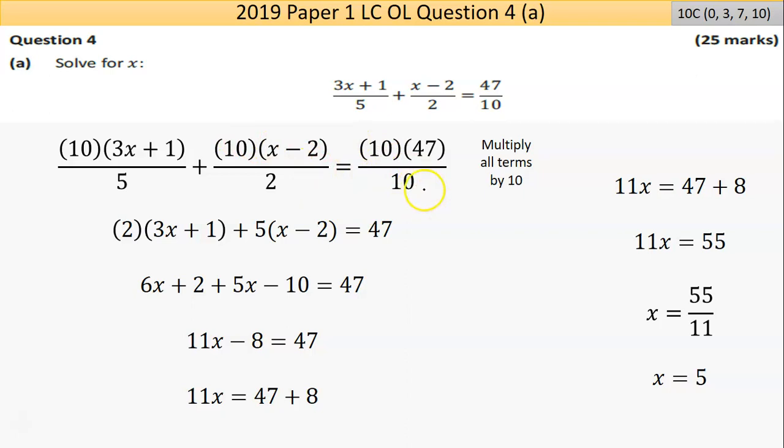I've multiplied every term by the same number, which I'm allowed to do in an equation. The reason I've done that is so that this would happen: 10 into 10 goes once, they cancel; 2 into 10 goes 5 times; 5 into 10 goes twice. This expression is the same expression, it's just there's no denominators or no bottom numbers.